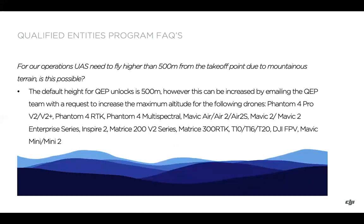If you need to fly the drone higher than 500 meters from the takeoff point, perhaps due to mountainous terrain, this can be done — just email the QEP team with a request to increase the maximum altitude. That capability is available for the following drones: Phantom 4 Pro, V2 versions, the RTK, Multispectral, Mavic Air, Air 2, Air 2S, Mavic 2, Mavic 2 Enterprise series, Inspire 2, Matrice 200 V2 series, the 300 RTK series, Agras FPV, and the Mavic Mini 1 and 2.